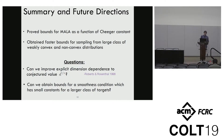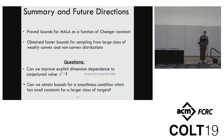One open question is whether we can improve the explicit dependence on dimension of our bounds to the conjectured value of d to the one-third. Another question is whether we can obtain bounds for a smoothness condition which has small constants for a larger class of targets.